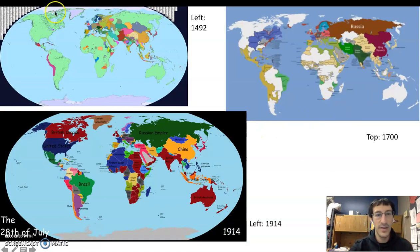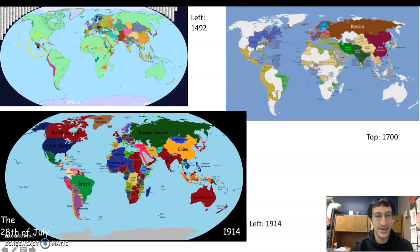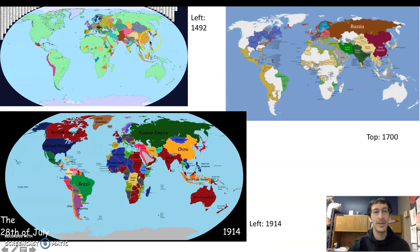On the left we have the empires, societies, and groupings that existed prior to Columbus's voyage. You can see a number of African city-states known at the time, the Incas, the Aztecs, the Ming dynasty, Mongol Khanates, tributary states, Japan, and a little bit of the Ottoman Empire as well.